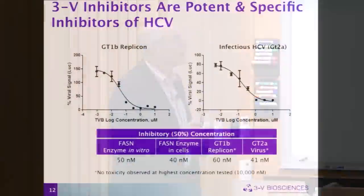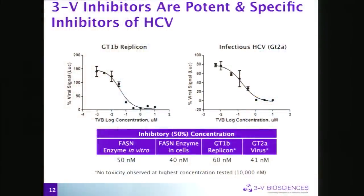Showing the antiviral data: on the left is the genotype 1B replicon for hepatitis C — we get nice suppression of viral RNA with an IC50 around 60 nanomolar. On the right is infectious hep C genotype 2A with an IC50 around 40 nanomolar. The table below shows our first evidence that hitting FASN is what gives us the antiviral response — whether we isolate the protein in vitro, use a HeLa cell without HCV RNA, or use HCV RNA or infectious virus, the potency is essentially identical across all scenarios.